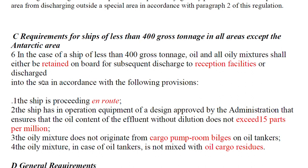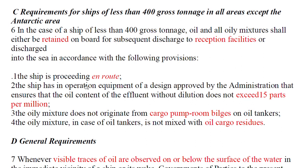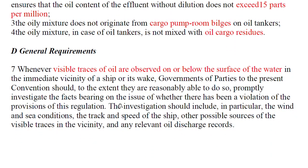If the vessel less than 400 GT wishes to discharge, the ship must be en route, and it must have equipment approved by the Administration in operation — they don't specifically call it an oil filtering equipment here, just equipment of a design approved by Administration — but the effluent upon dilution must not exceed 15 parts per million. The oily mixture must not originate from cargo pump room bilges, and in the case of an oil tanker, the mixture must not be mixed with oil cargo residues.